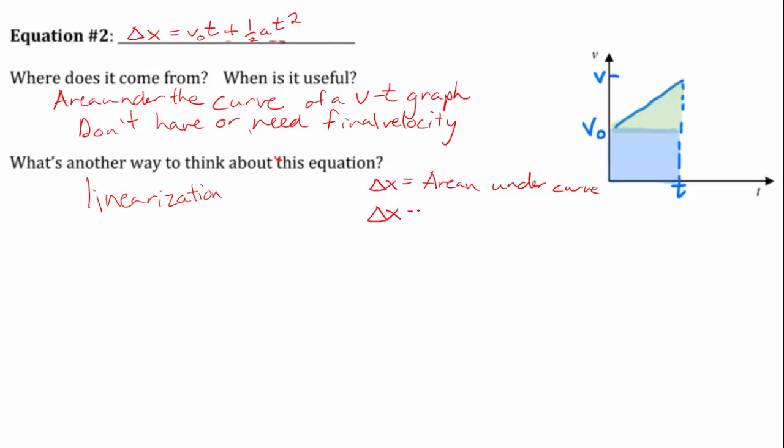So delta x displacement equals, we'll do this one first. So it's just the base times height for the area of a rectangle. The base is t. The height is v-naught. So we have v-naught times t. And then we need to add in the area of the triangle. So remember, the area of the triangle is one-half the base times the height, again. So again, we're going to do base times height, one-half base times height.